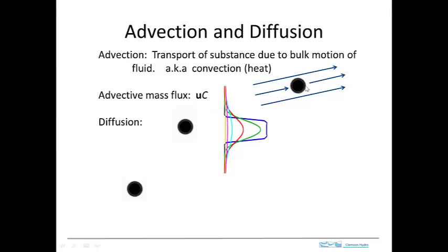If we forget about the flow and just introduce this circular region of higher concentration, a cross section through it would show the concentration initially looking like a sharp profile. Then with time it would spread: the concentration of this region would decrease and it would spread out, so the concentration further out would increase. This is just the diffusive process, and it would happen even in a static fluid.